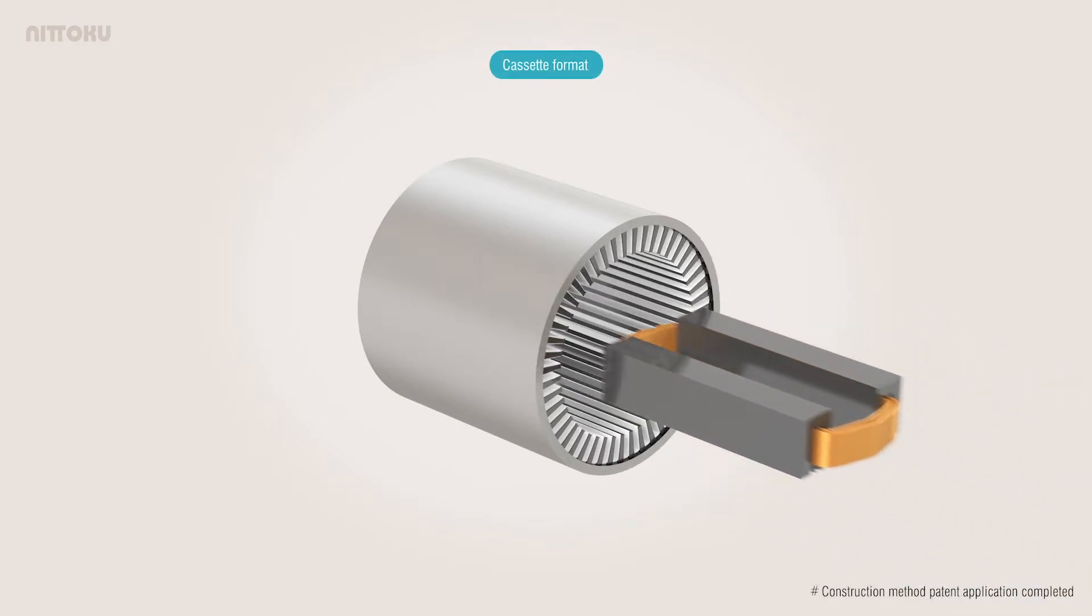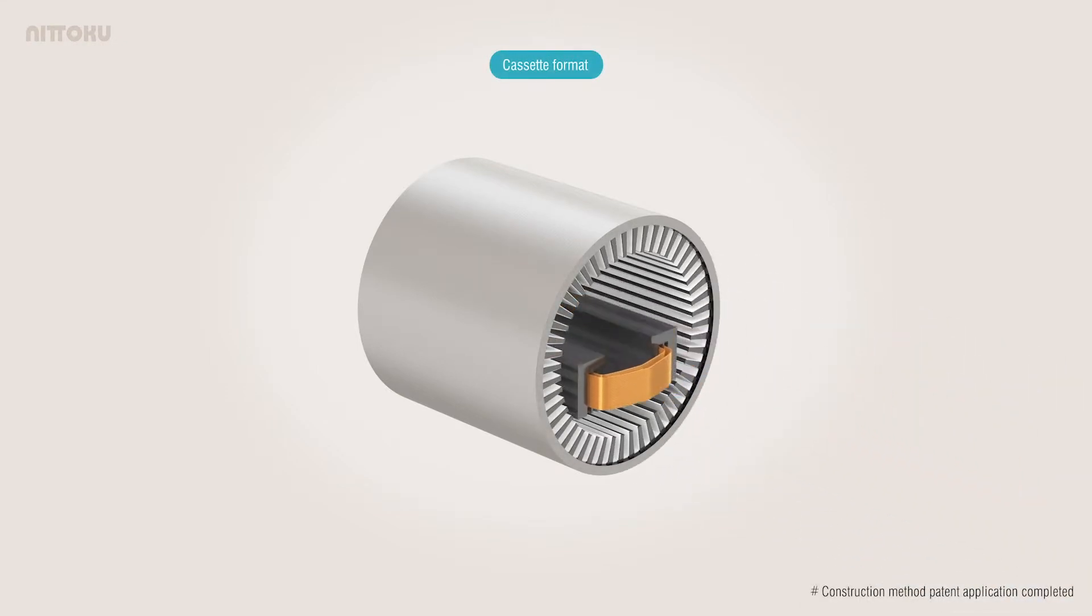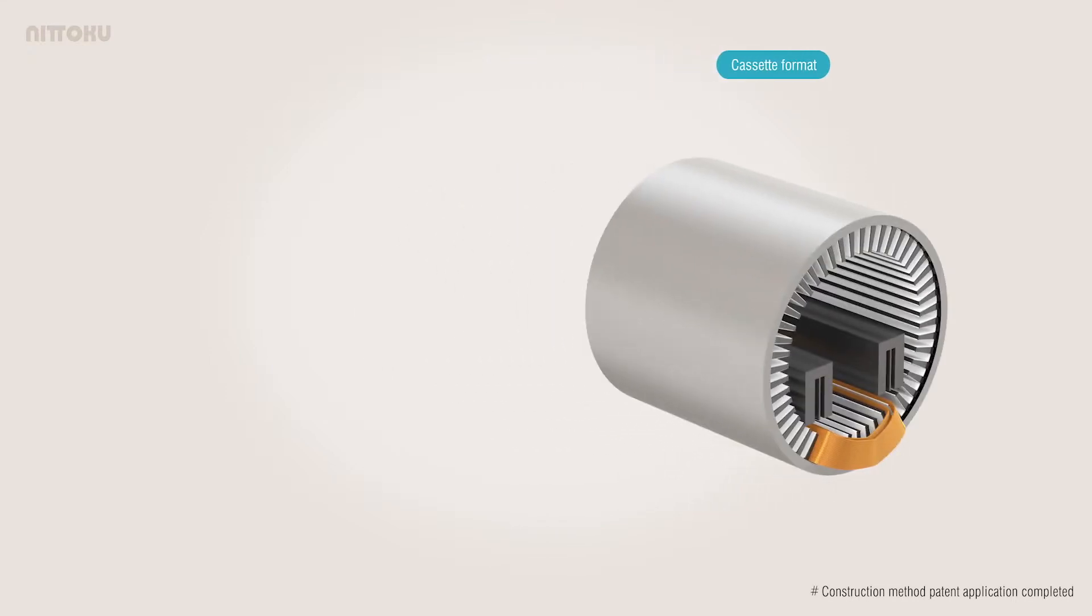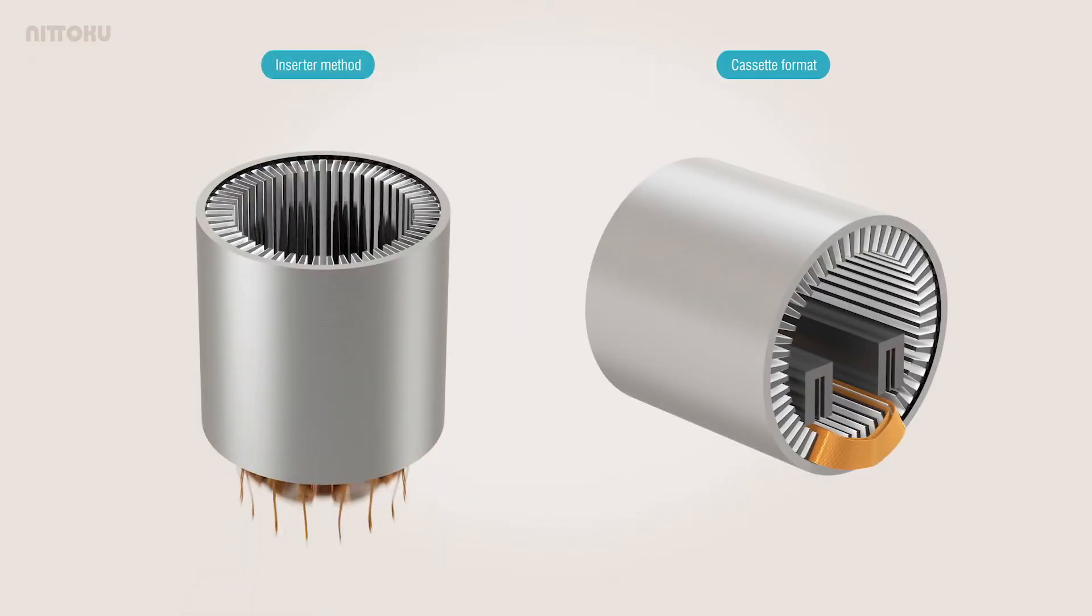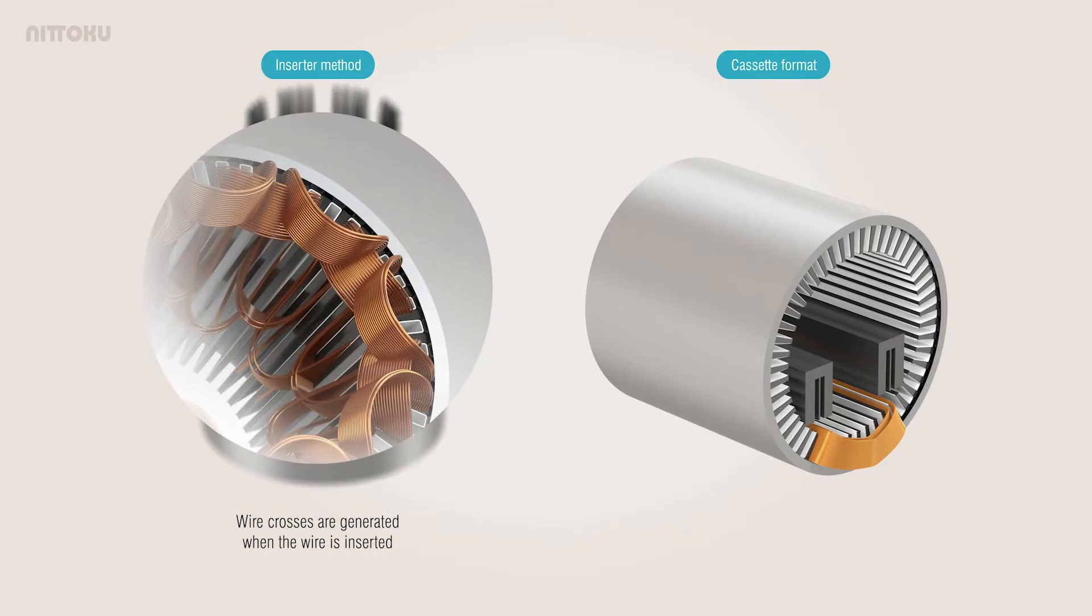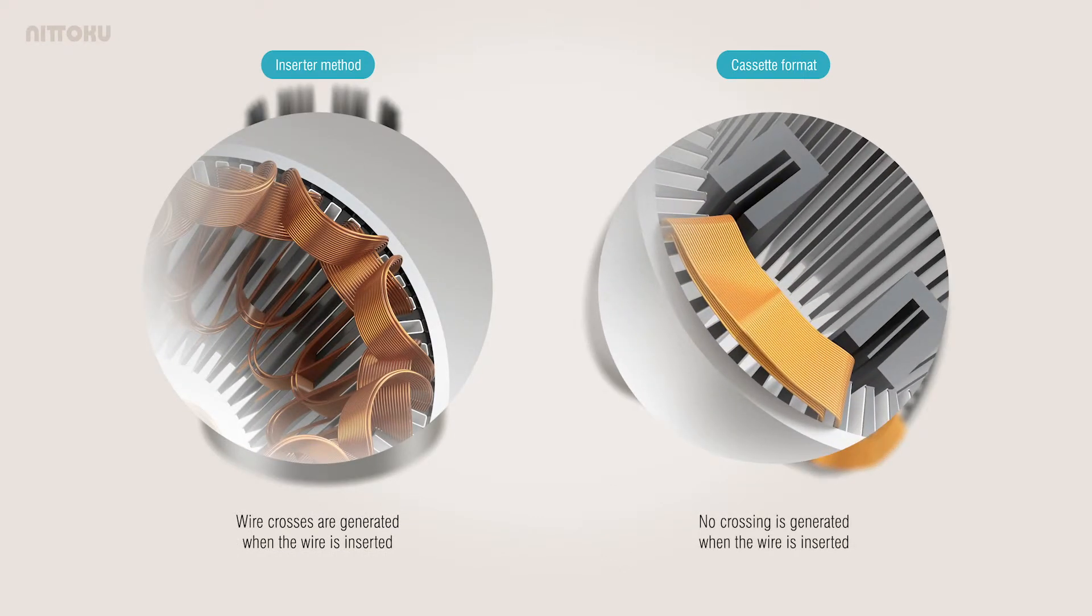The advantage of the new construction method is that electrical defects can be greatly reduced. In the inserter method, the crossing of the electric wire is generated in multiple places when the electric wire is inserted. Whereas in the new cassette method, wire crossing is severely limited.